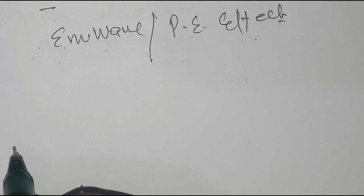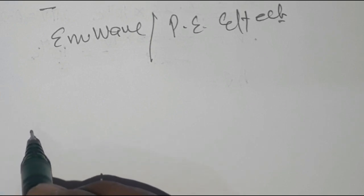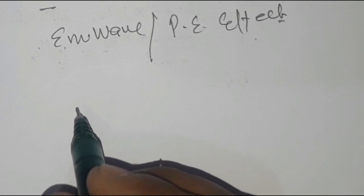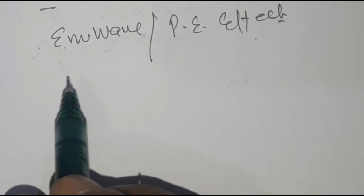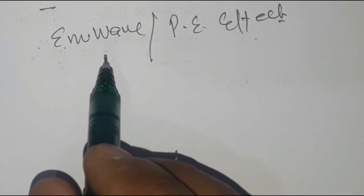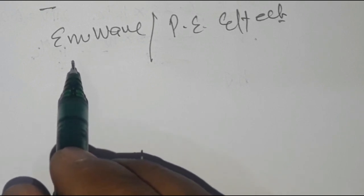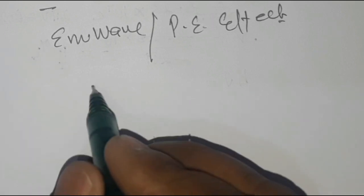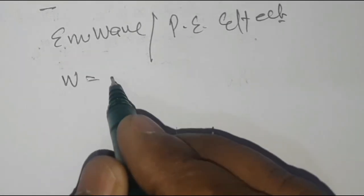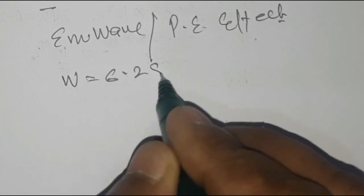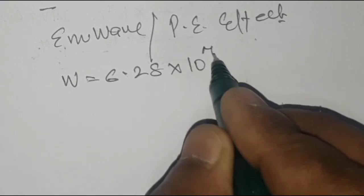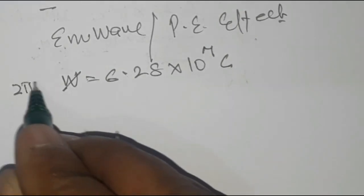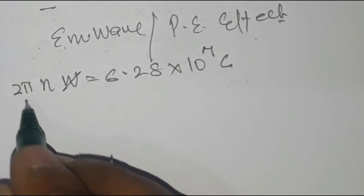Since two waves of different frequencies are given, to find the maximum kinetic energy of the photoelectron, we take the maximum frequency. The two frequencies given are 3.14×10⁷ and 6.28×10⁷. So we take ω = 6.28×10⁷ c. From the equation sin(ωt), omega equals 2π times frequency, so we can find the frequency ν = ω/2π.